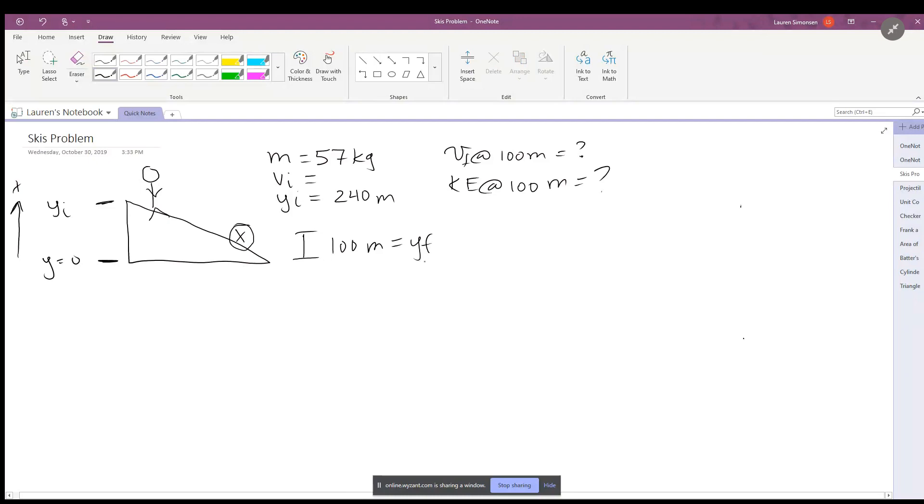She is going to come down to this point 100 meters from the bottom, which is going to be our final position. We need to find the velocity at that position and also the kinetic energy.